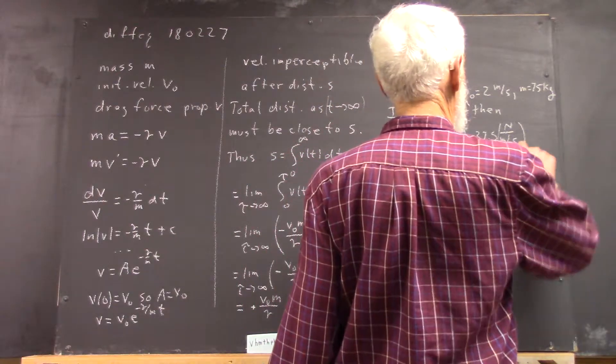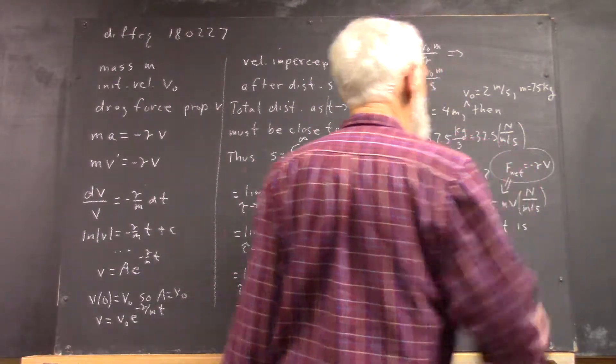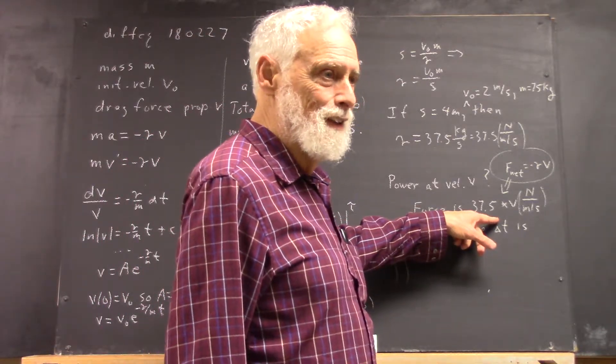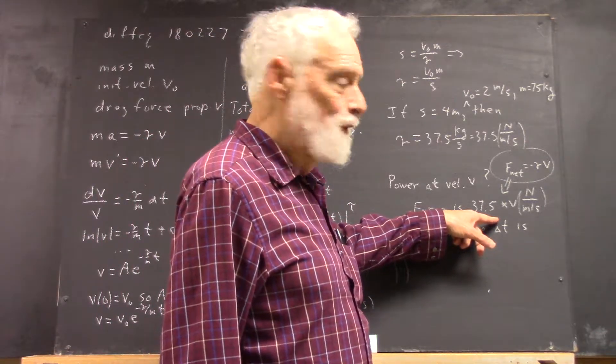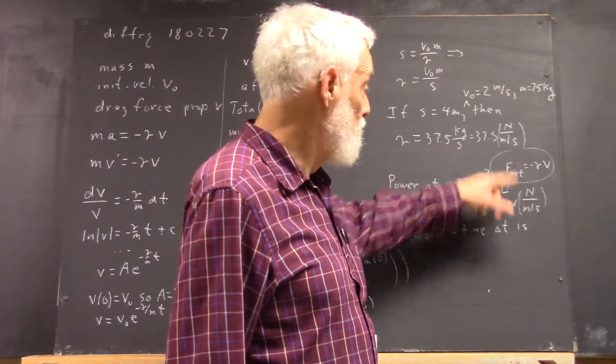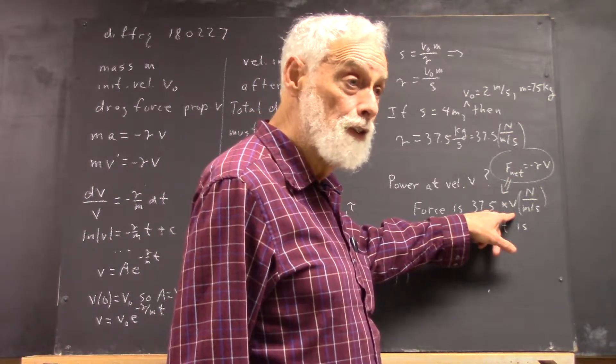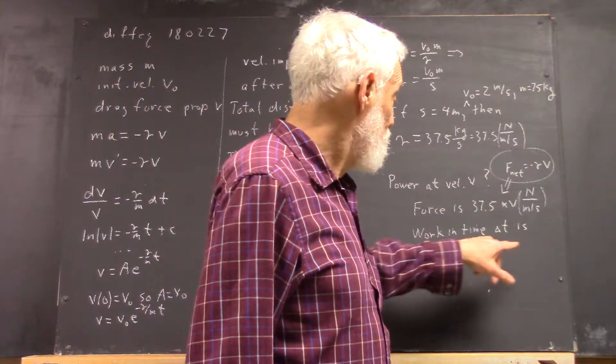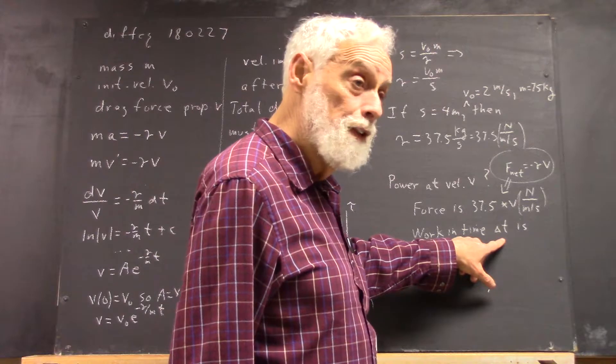So we have this, it implies this. There's some assumptions I didn't state here, but if this is the net force acting on me, then to move at constant velocity V, this is the force I've got to exert, right?